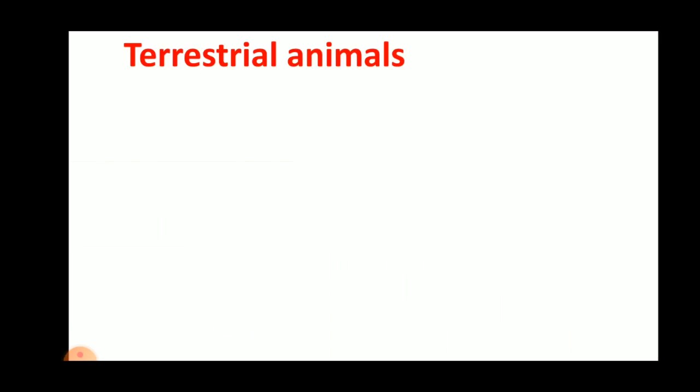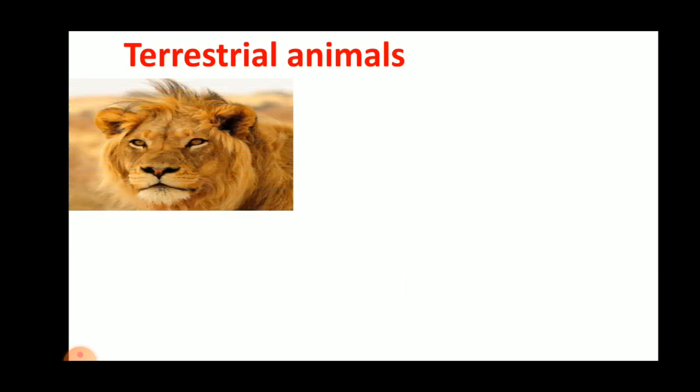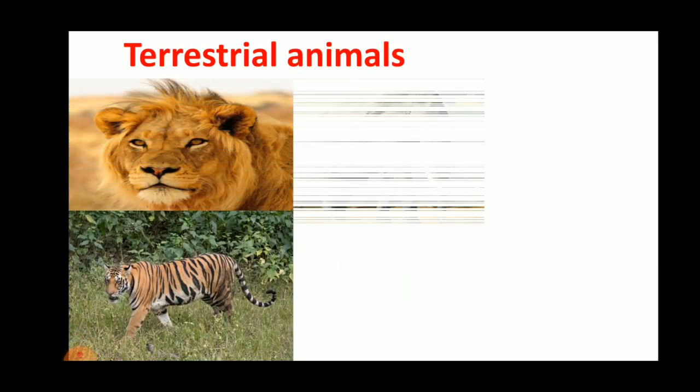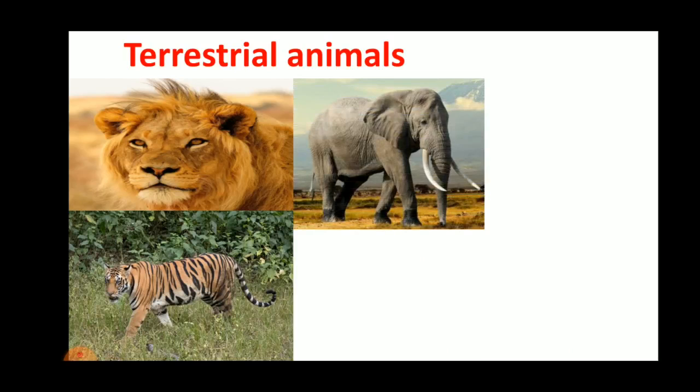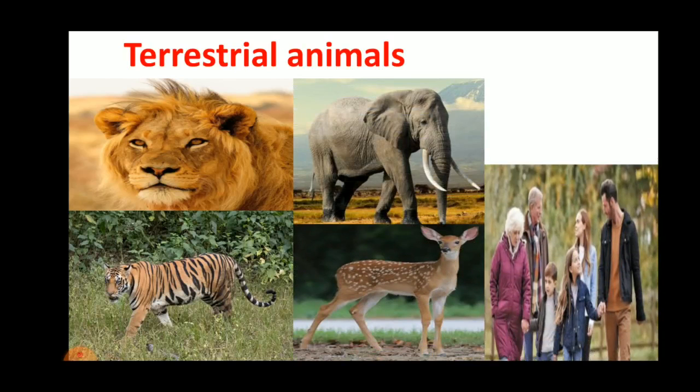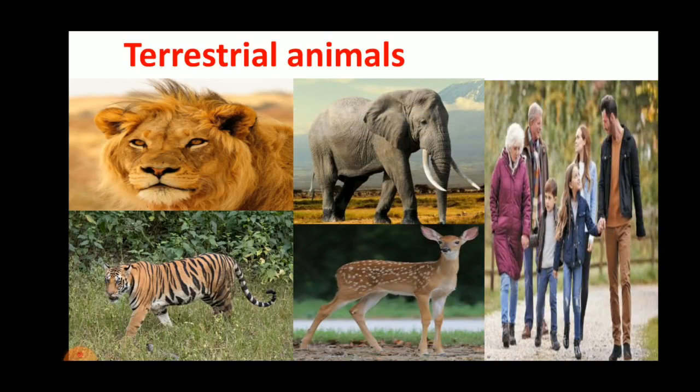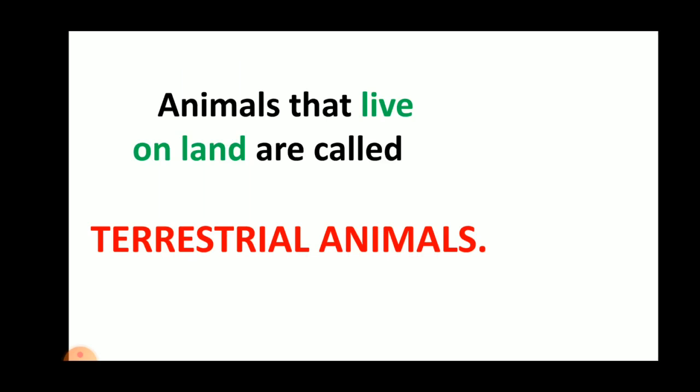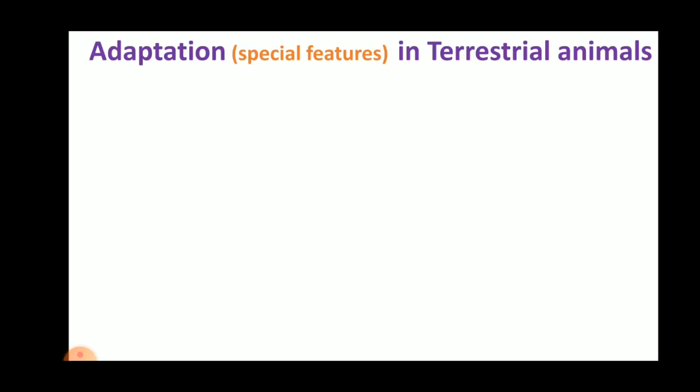Animals like Lion, Tiger, Elephant, Deer, and Human Beings live on land. Such animals are called Terrestrial Animals. Now let us discuss the special features that help them to live on land.